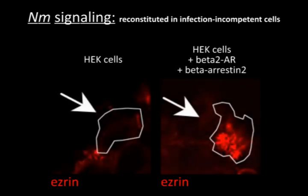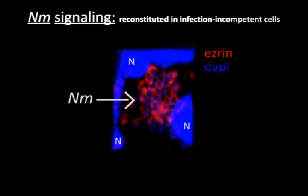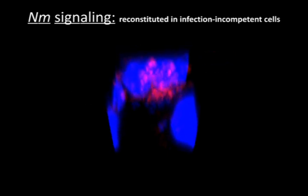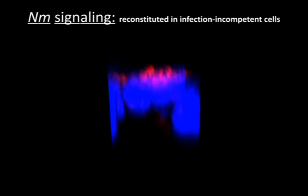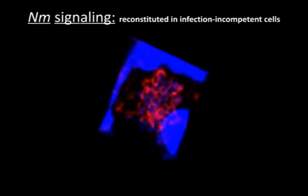Infection-incompetent HEK cells induce no ezrin recruitment under the colony. However, transfection of HEK cells with the receptor and beta-arrestin restores signalling induced by meningococcus. This reconstituted signalling in HEK cells resembles that found in endothelial cells: ezrin and actin, here in red, are recruited under the colony and clearly localised in the apical region of the cell surrounding the bacteria in membrane protrusions. This pathway is therefore necessary and sufficient to trigger meningococcal signalling.